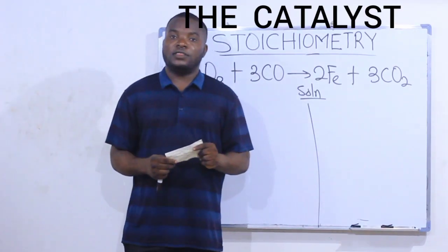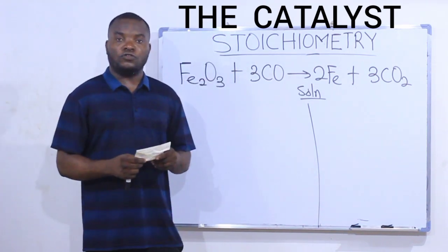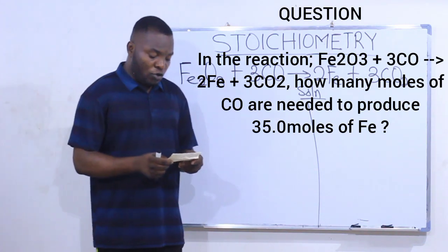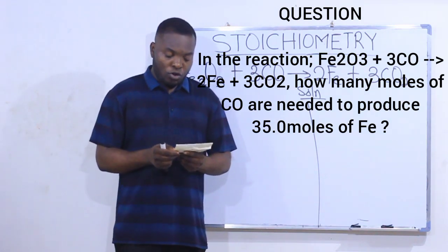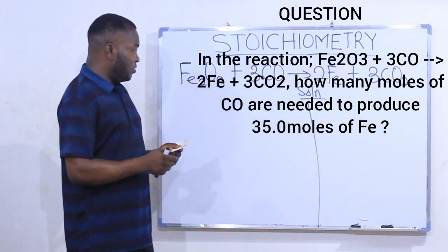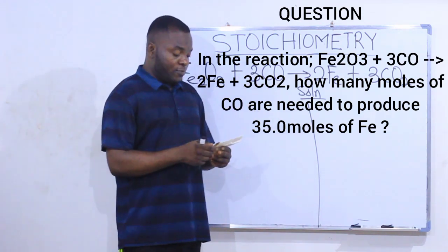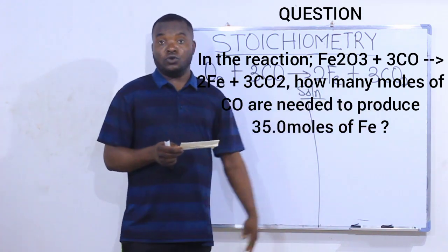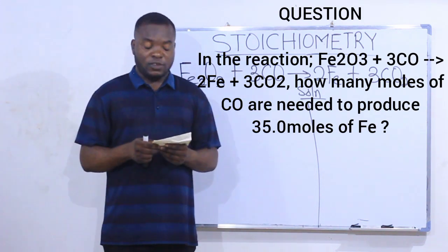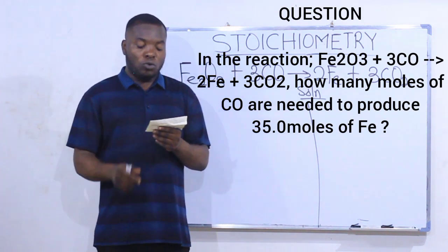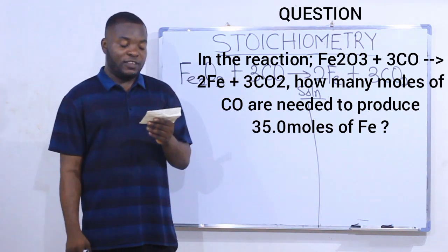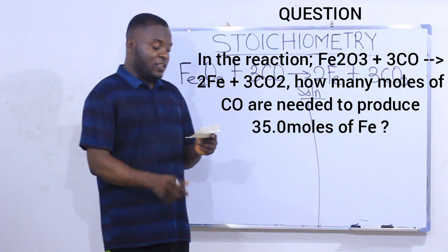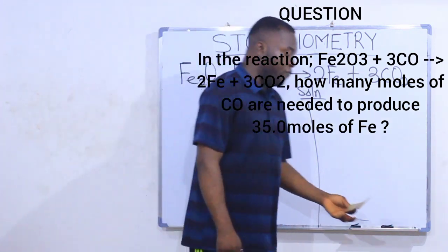Let's quickly take a look at this question on stoichiometry. The question says: in the reaction, iron oxide plus carbon monoxide producing iron and CO2, how many moles of carbon monoxide (CO) are needed to produce 35.0 moles of iron?